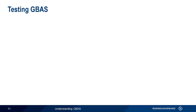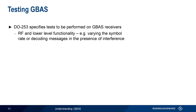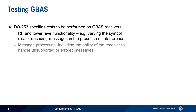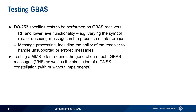With regards to testing GBAS, DO-253 contains two categories of recommended tests. The first category addresses RF and lower-level functionality — for example, varying the symbol rate, or decoding messages in the presence of noise and interference. The second category addresses the ability of the receiver to process different types of GBAS messages, including erred or unsupported messages. Note that testing a multimode receiver on an aircraft often requires the generation of both the GBAS signals as well as the dynamic simulation of a GNSS constellation.